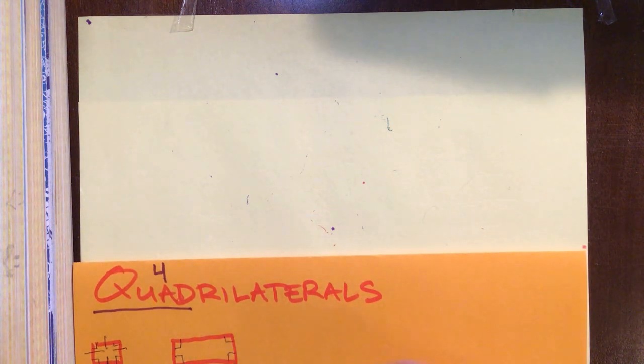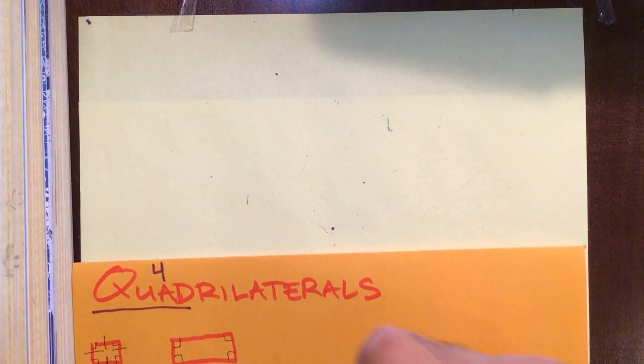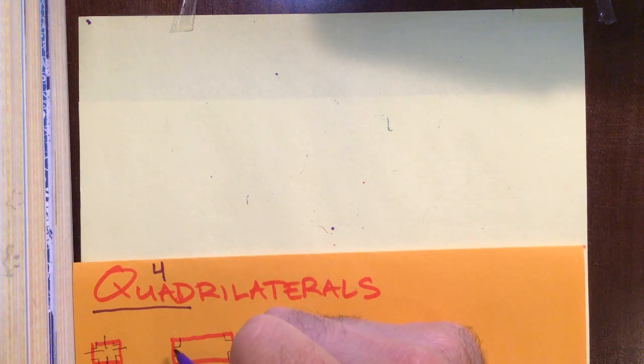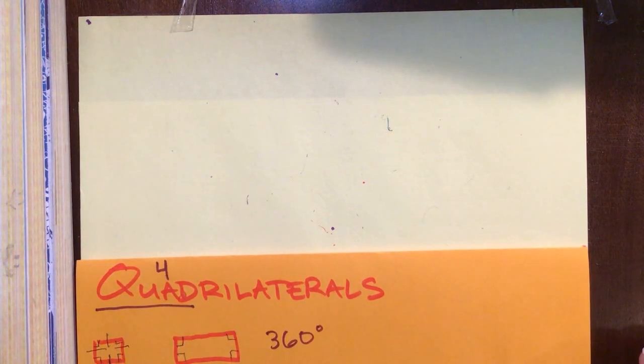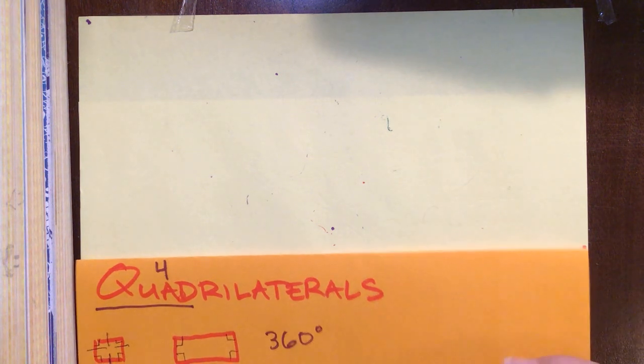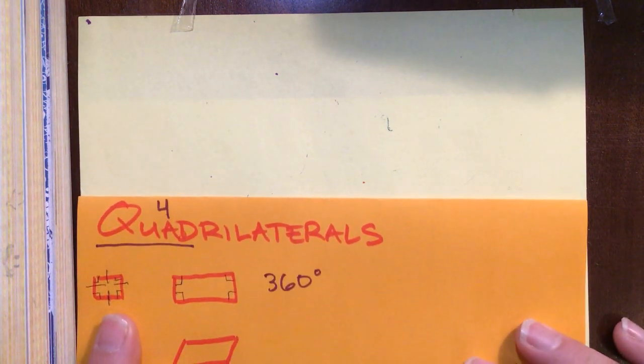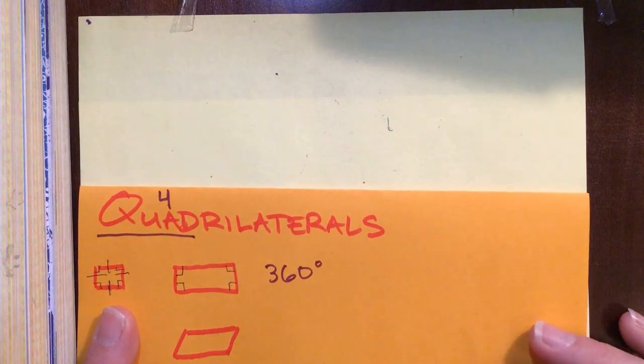Rectangles have short sides and longer sides. Bottom line is 90 plus 90 is 180 times 2 is 360. All squares and rectangles are going to have 360 degrees. But now picture Mr. Douglas standing on the rectangle and it squishes a little bit, he broke it, right?